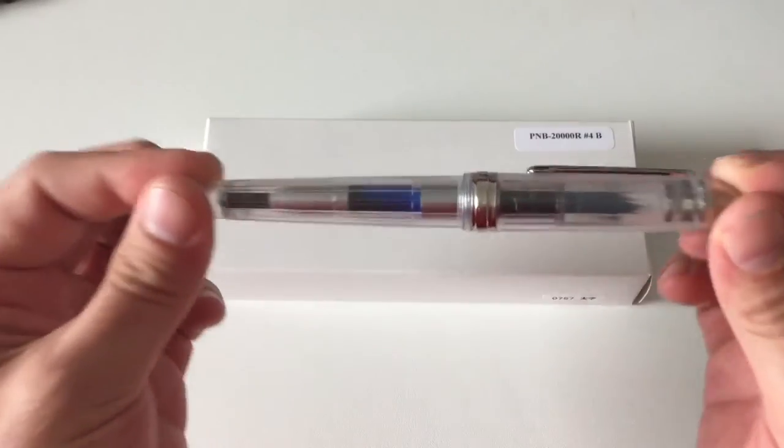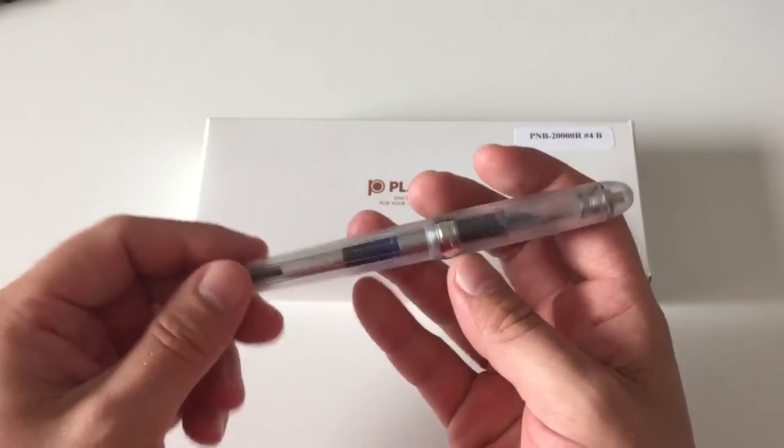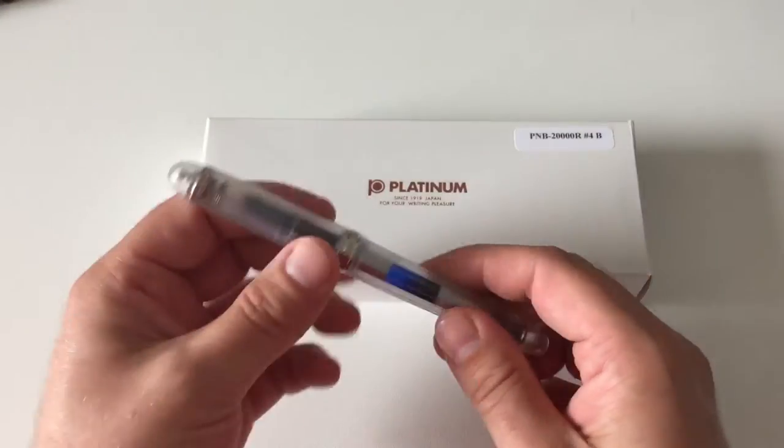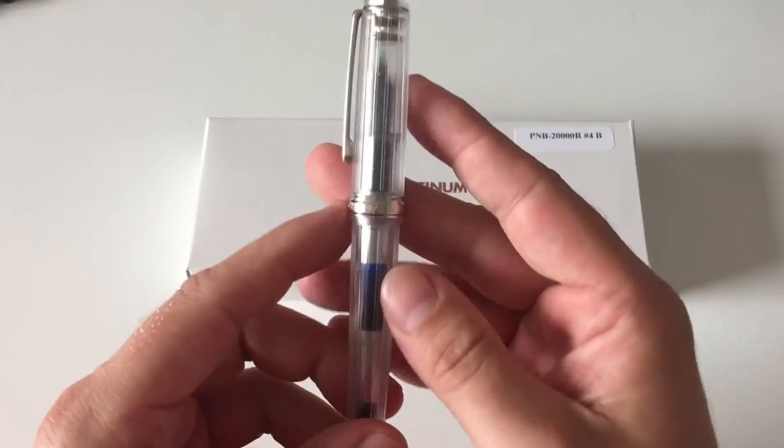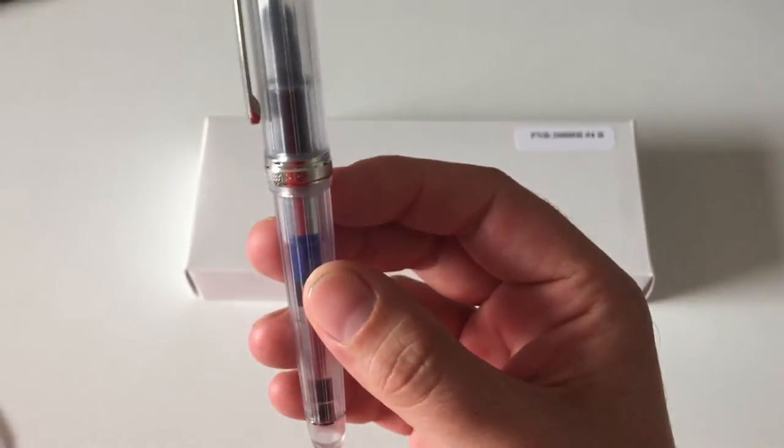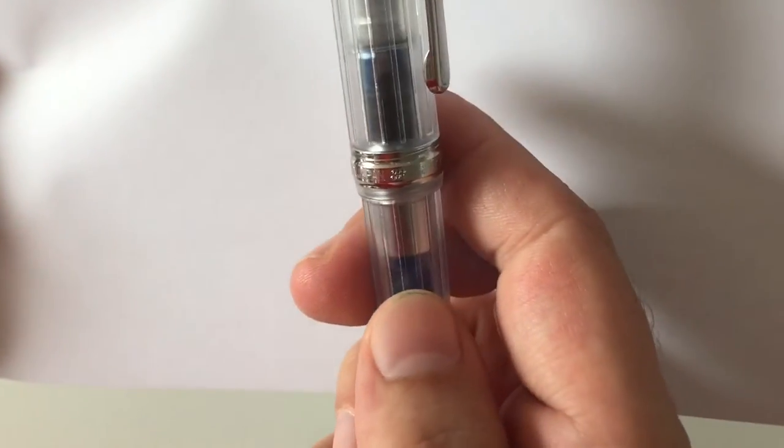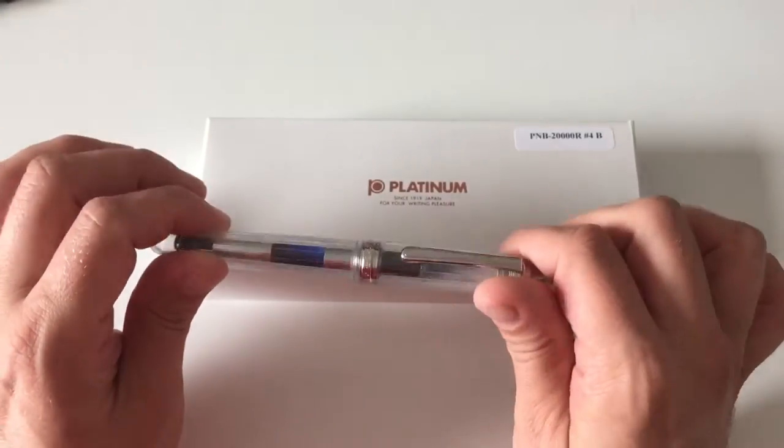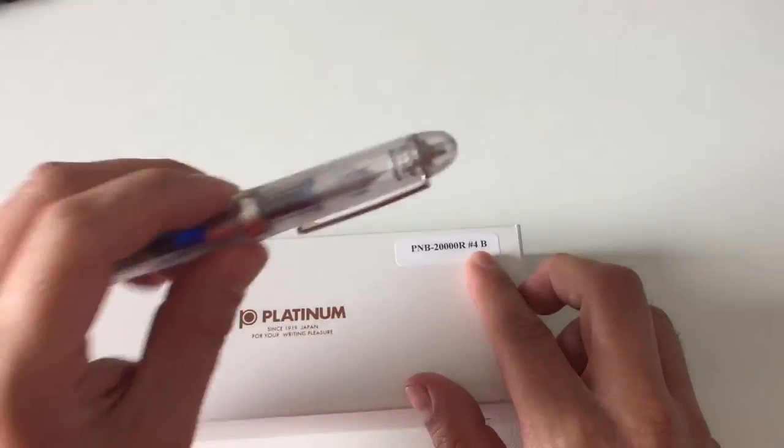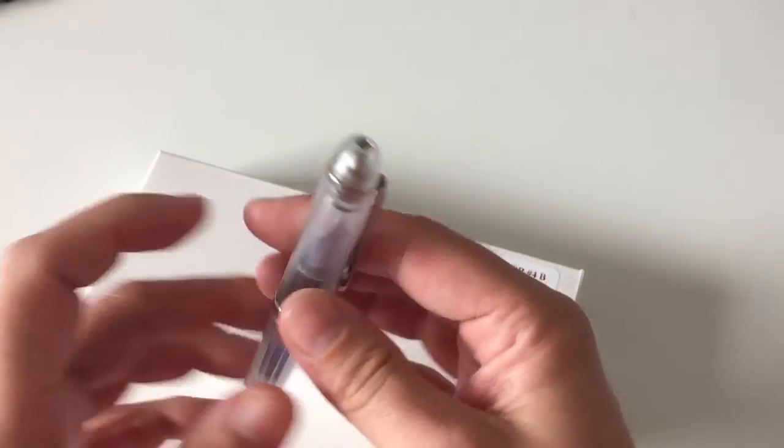I got this pen sent from Platinum Pen USA, Luxury Brands of America—thanks a lot, John. You can check out all the other Platinum Century pens at their website or your favorite fountain pen dealer. It's called 3776, and you can see that here on the clip—it says Platinum, Made in Japan, 3776—because that is the height of Mount Fuji in Japan in meters.